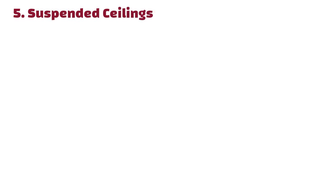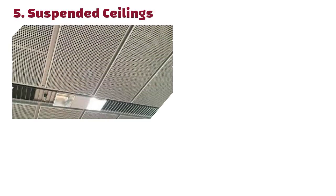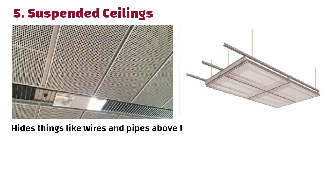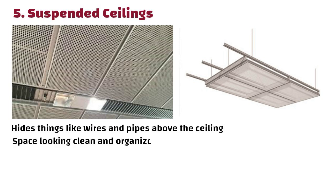Suspended Ceilings. These ceilings are made of metal panels that hang from the main ceiling using a grid or framework. This setup hides things like wires and pipes above the ceiling, making it easier to keep the space looking clean and organized.